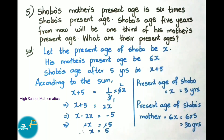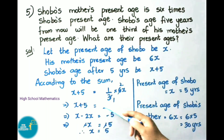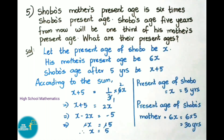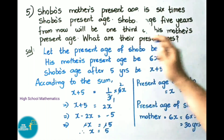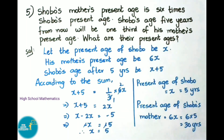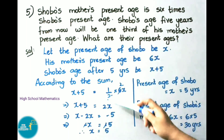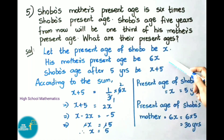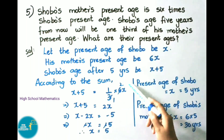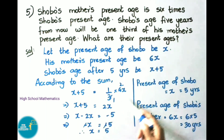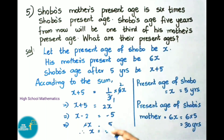According to the problem: x + 5 = (1/3) × 6x. Simplifying: x + 5 = 2x. Transposing: x − 2x = −5, which gives −x = −5.